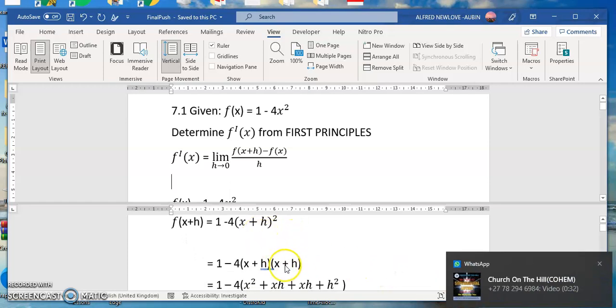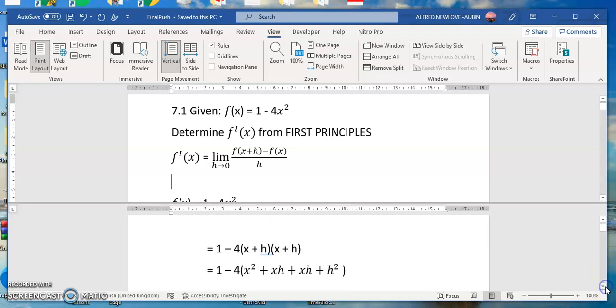If you simplify this, you know this is going to multiply that to give you this, this is going to multiply that to give you xh, this will multiply that to give you that, and h will multiply that to give you h squared. Then when you simplify, you will still have this, then xh plus xh is going to give us 2xh plus h squared.